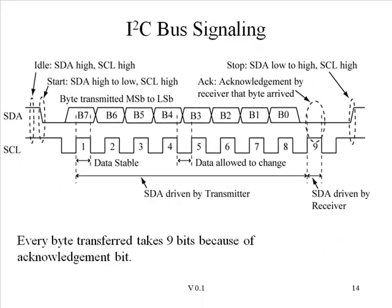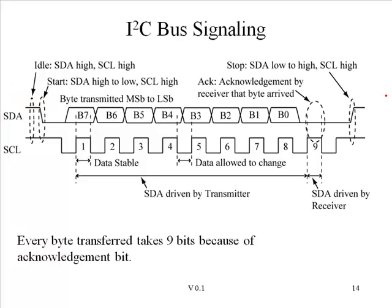In a given I2C transaction, a byte is exchanged in the following fashion. At the beginning of each transaction, a start signal occurs — this is when the SDA line falls low while the clock is high. Otherwise, the SDA line does not transition while the clock is high. Likewise, the special condition of a low-to-high transition on SDA when the clock is high signals the termination or stop of an entire I2C bus transaction.